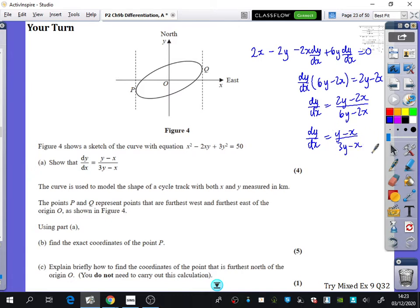The alternative form that you could have got of this would have been x minus y over x minus 3y, but then you could negate it to make it look like this thing that we've got here.